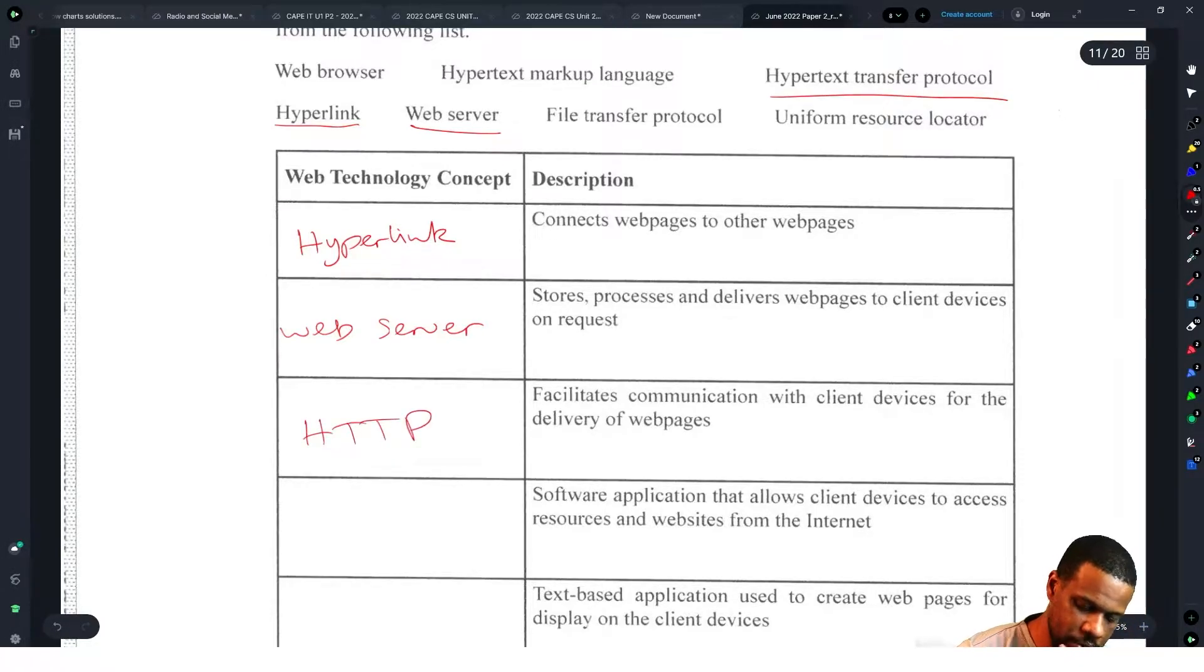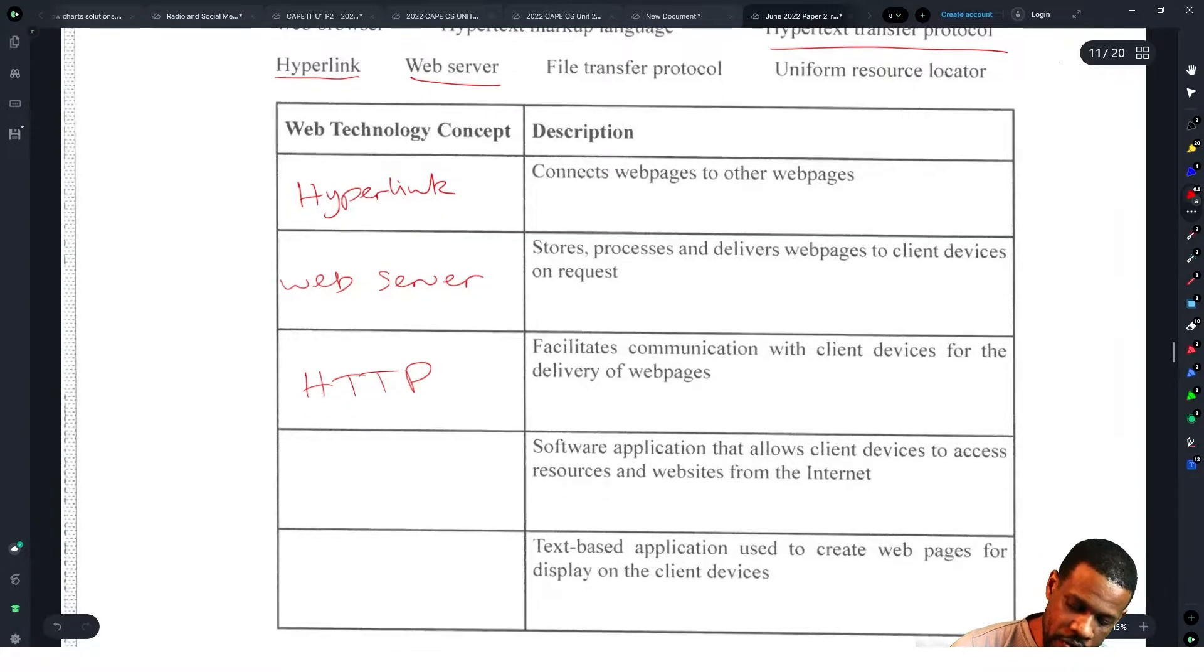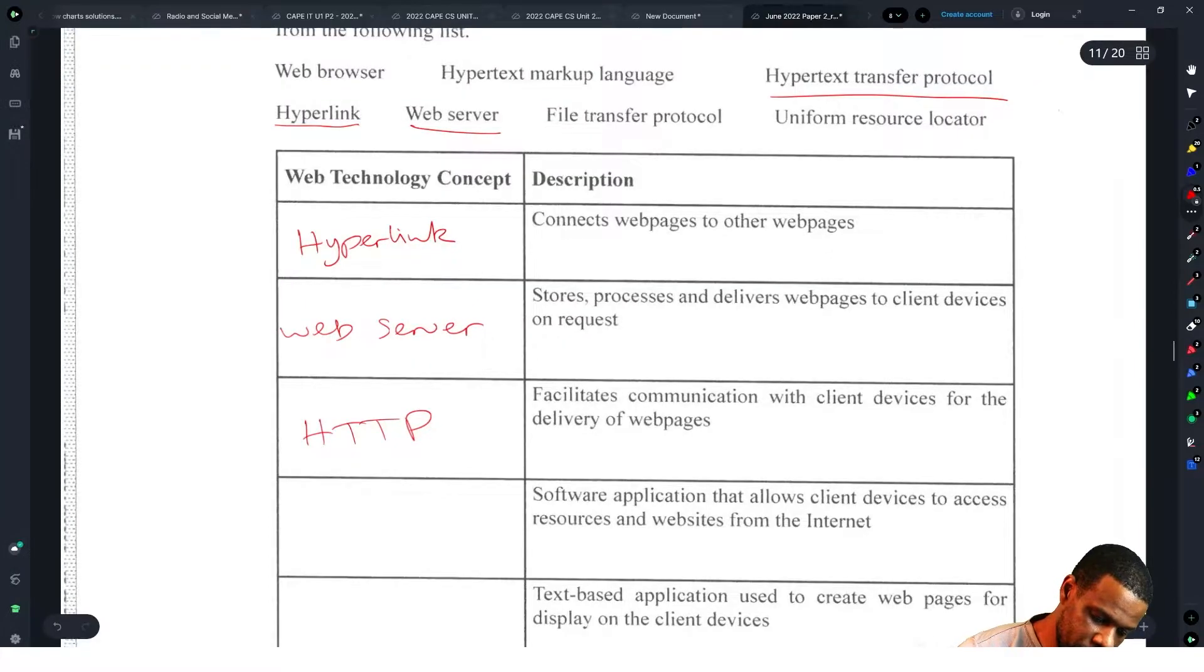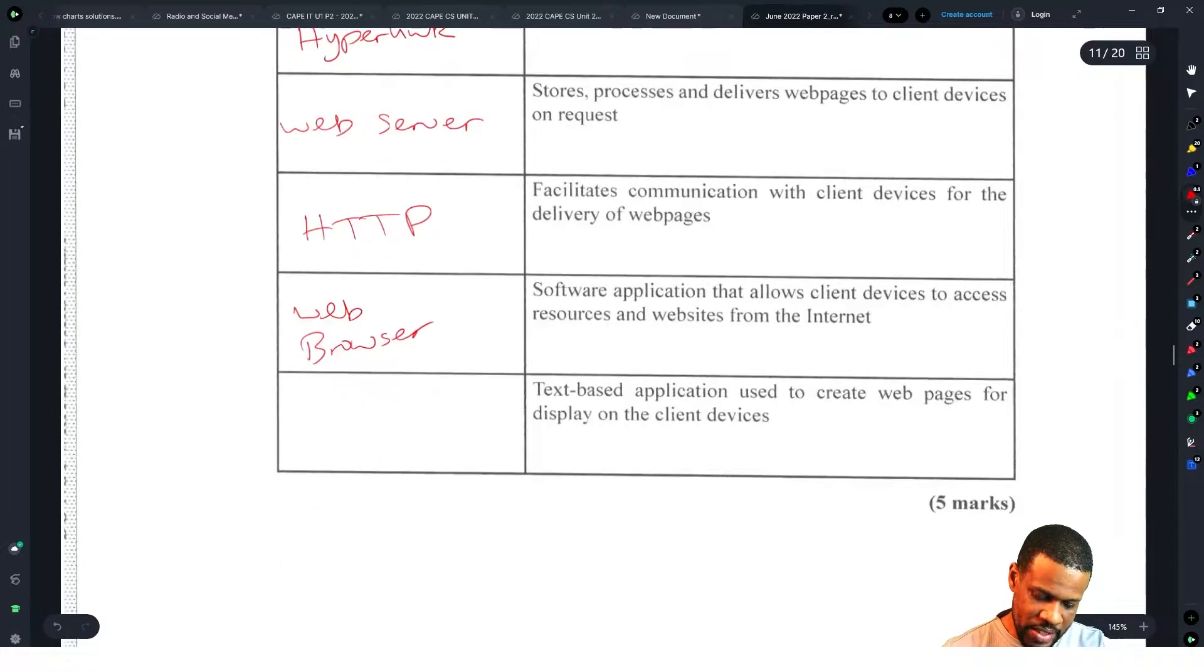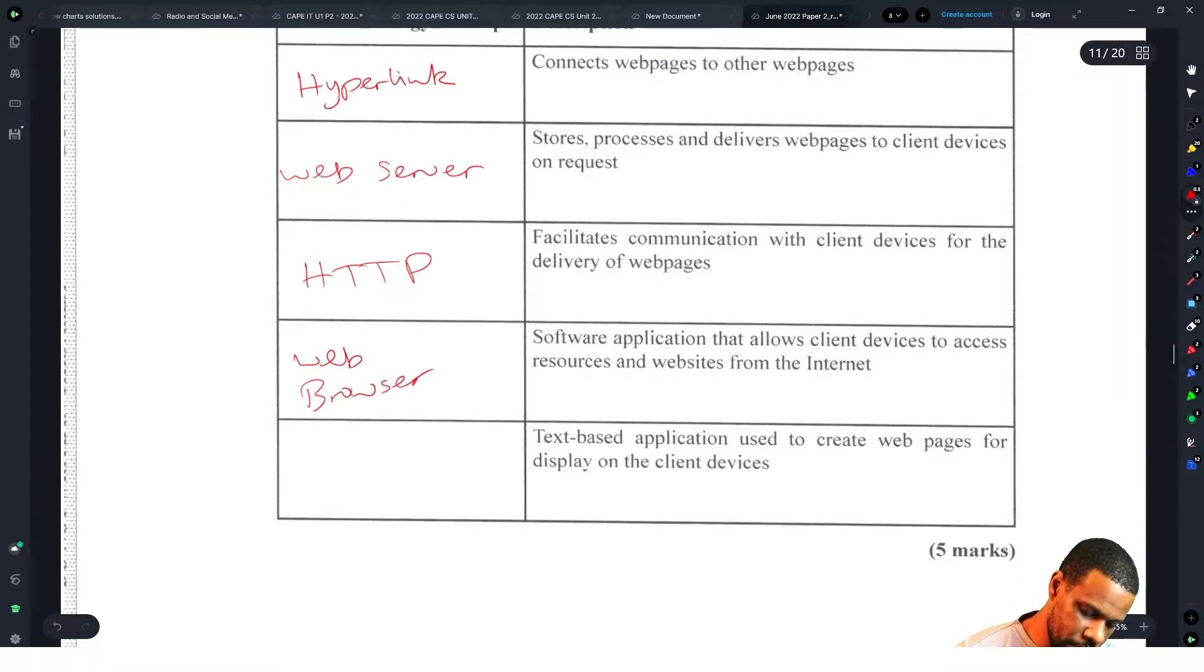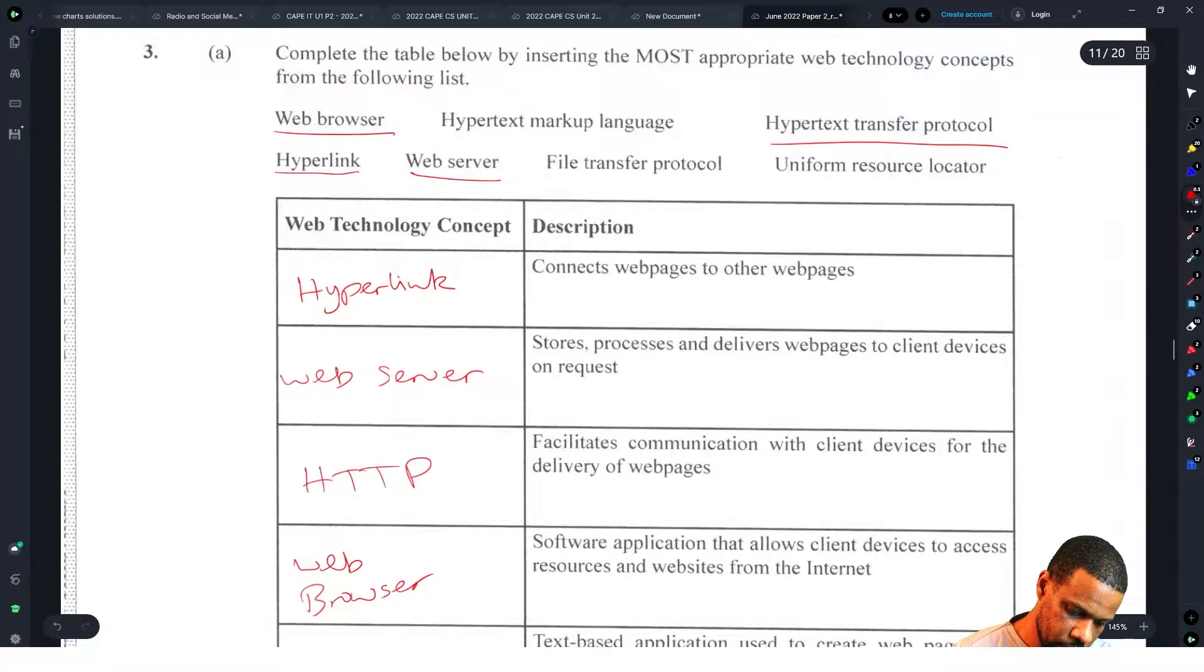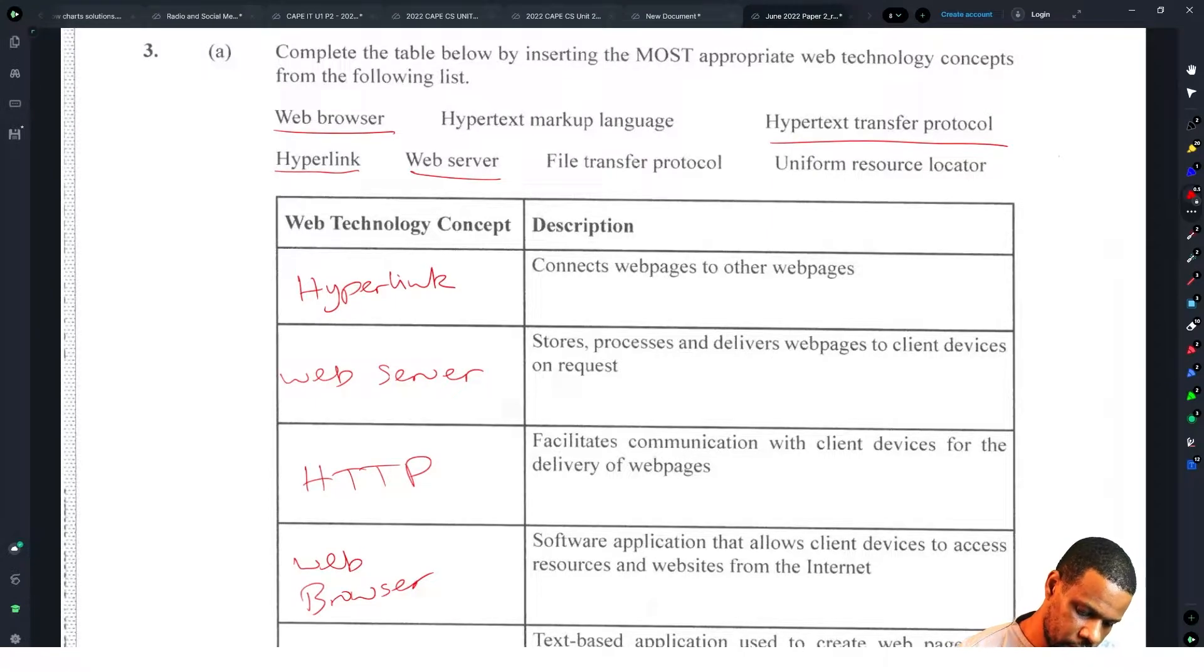I really don't have time to write all that. Software application that allows client devices to access resources and websites - web browser. Text-based application used to create webpages for display on internet is HTML.